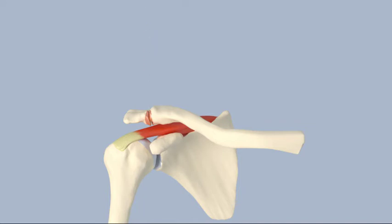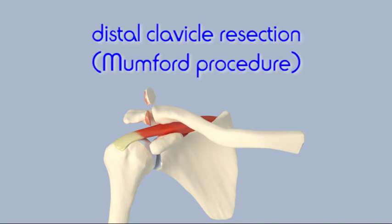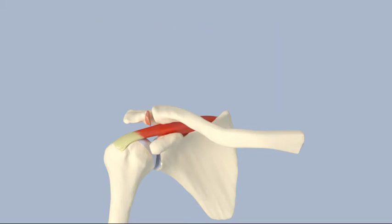If pain continues despite conservative treatment, a surgery known as a distal clavicle resection or Mumford procedure may be considered. This involves removing the end of the clavicle so it cannot rub and grind against the acromion. Distal clavicle resection can lead to a slight sensation of instability at the AC joint but relieves the arthritic pain.